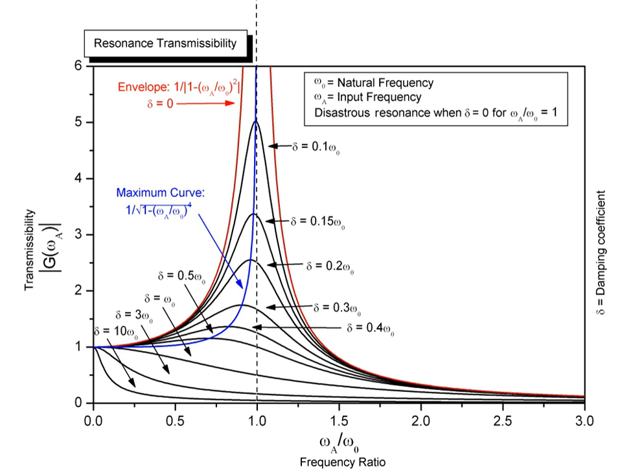Resonance phenomena occur with all types of vibrations or waves. There is mechanical resonance, acoustic resonance, electromagnetic resonance, nuclear magnetic resonance, electron spin resonance, and resonance of quantum wave functions.